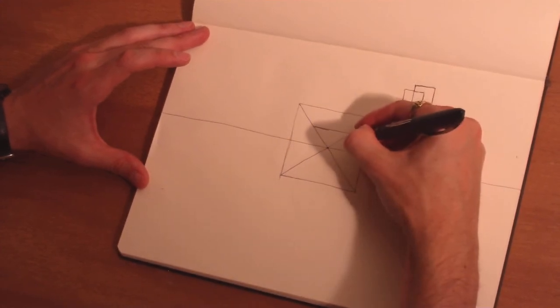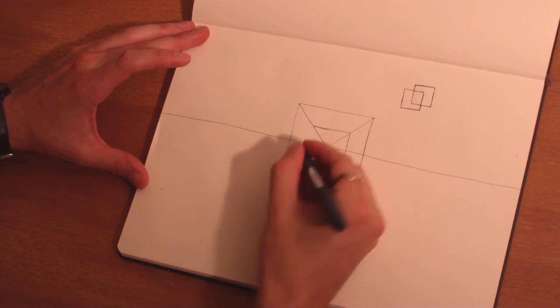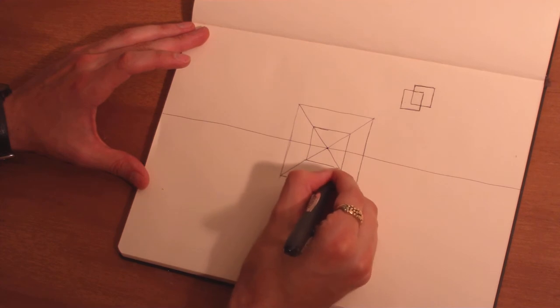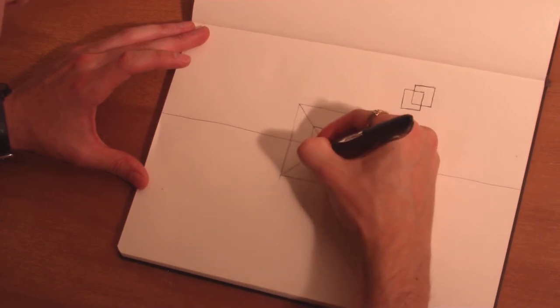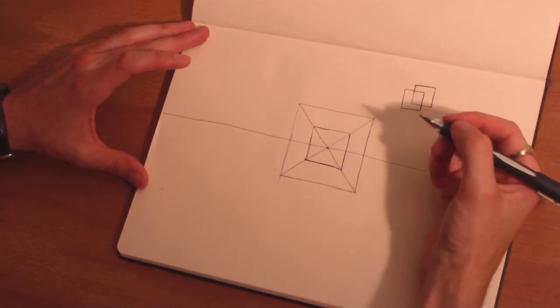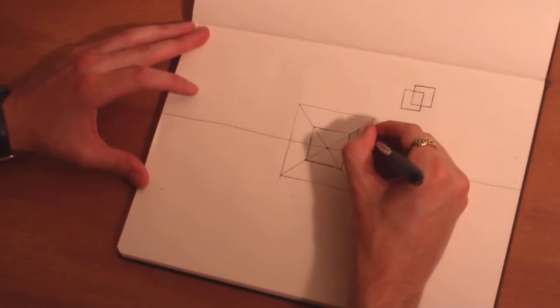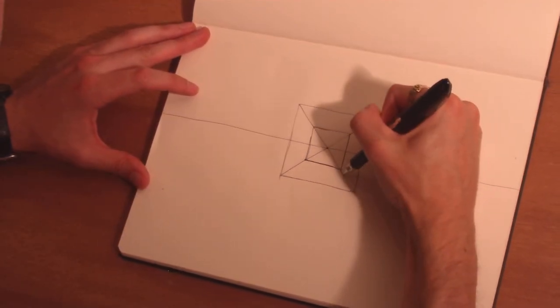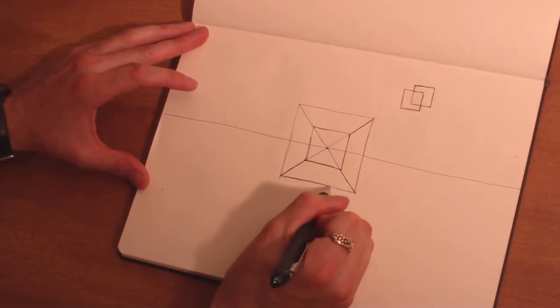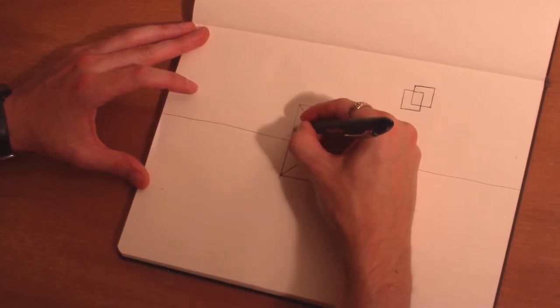But now what we're going to do is we're going to draw another square smaller and just make it intersect along these receding lines that go to the vanishing point. So now we've effectively drawn a cube in space, but ignoring the solidity of the object.